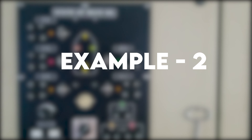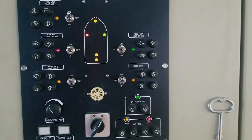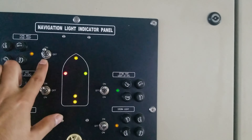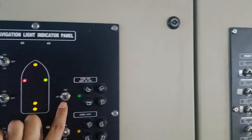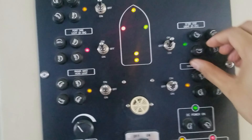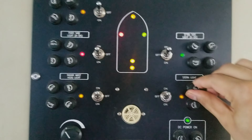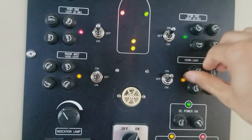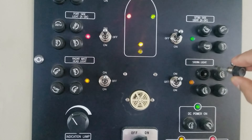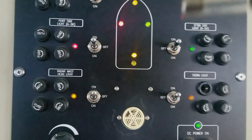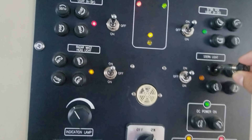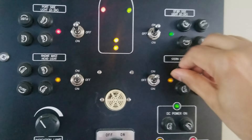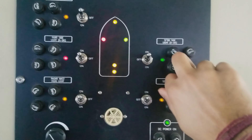For additional knowledge, I'll show you a different navigation light indicator panel. Here also, all navigation lights are switched on and upper navigation lights are selected. Unlike the previous panel where fuses were located below, on this panel the fuses are provided on the side of the panel. To perform the fuse test here, you simply turn the fuse anti-clockwise and remove it. You can hear the alarm sound. When you put the fuse back, the alarm is gone.